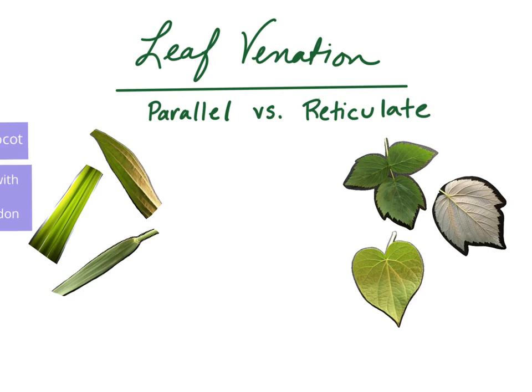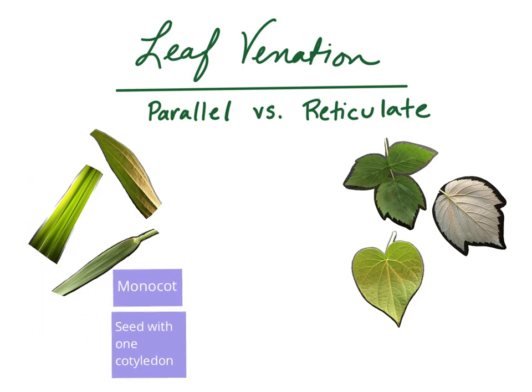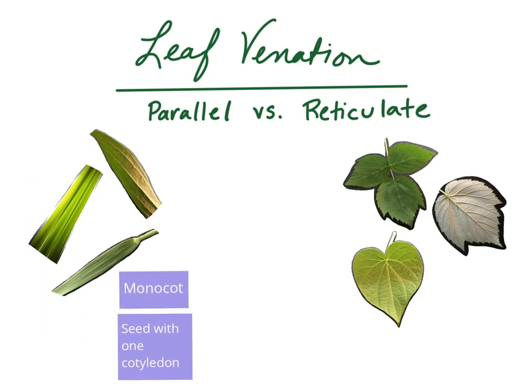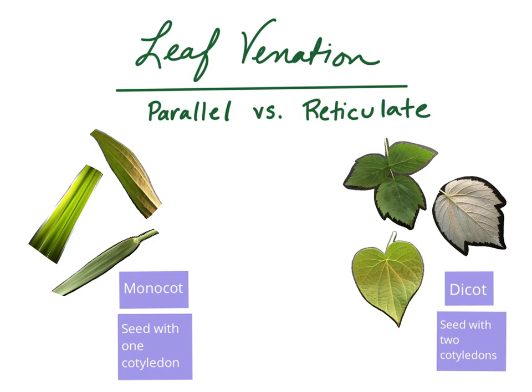Plants with parallel venation tend to come from monocots, which are plants that have one cotyledon feeding the seed. Plants that have reticulate venation tend to come from dicots, which are plants that have a seed with two cotyledons.